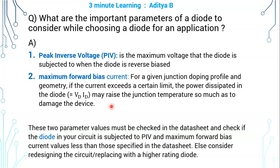These two parameter values must be checked in the datasheet, and you must verify that the diode in your circuit is subjected to PIV and maximum forward bias current values less than those specified in the datasheet.